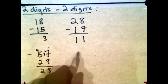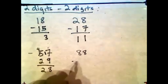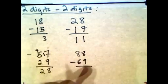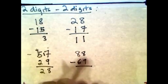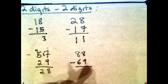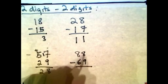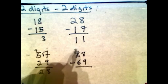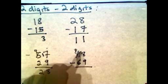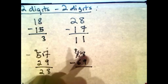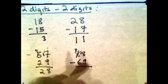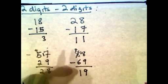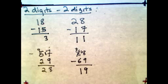Let's try another one: 88 minus 69. See that 9 is bigger than 8, so you can't really do it — you borrow from the 8 tens, which becomes 7 tens. That 10 is carried to the 8, making it 18. 18 minus 9 is 9. Then 7 minus 6 is 1. So the answer is 19.